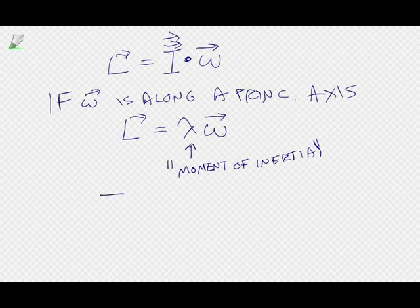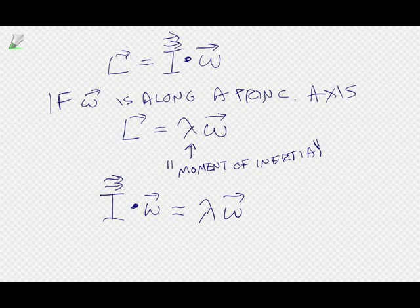Let's put these two equations together. I have the I matrix — the inertia tensor, but it's a matrix — matrix product with the omega vector is equal to a scalar times the omega vector. Those of you who have taken linear algebra will recognize this as the eigenvalue equation.